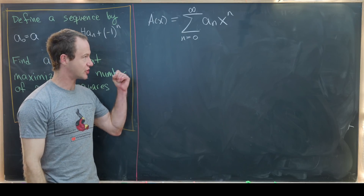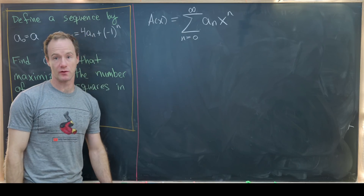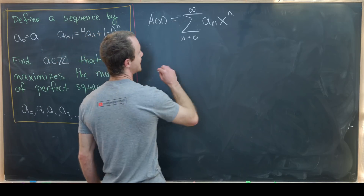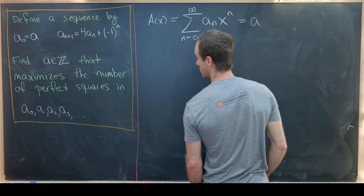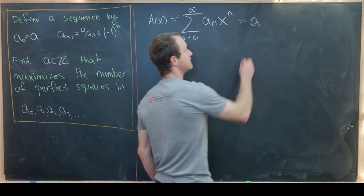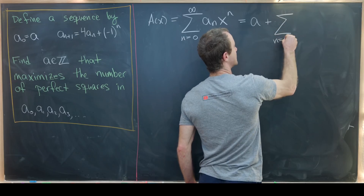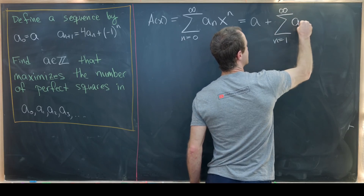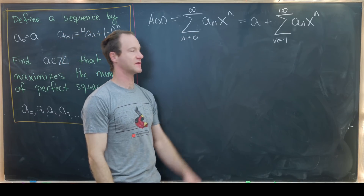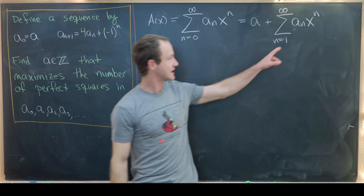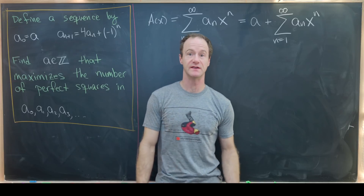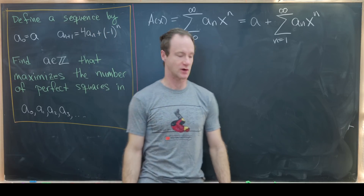Next, I'll take out the 0th term so that I can apply the recursion to the rest of the terms. If I take out the 0th term, I have a_0, and notice that a_0 is equal to a times x^0, which is 1, plus the sum as n goes from 1 up to infinity of a_n x^n. All I've done is taken out the 0th term. Next, I'd like to re-index this so that it has an n+1 in the subscript, so I can easily apply the recursion.